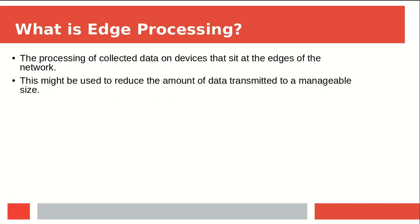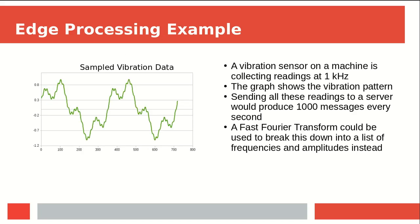Onto the edge processing I mentioned earlier. Edge processing is data processing that's performed on the device — the thing — before the data is transmitted. The name comes from the fact that the device sits at the edge of the network. Typically, edge processing might be used to make the data more compact and easier to transmit. Here's an example: imagine that we have a vibration sensor attached to the side of a machine, recording the vibrations.